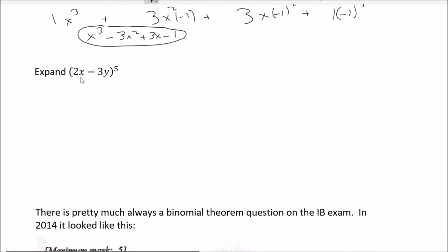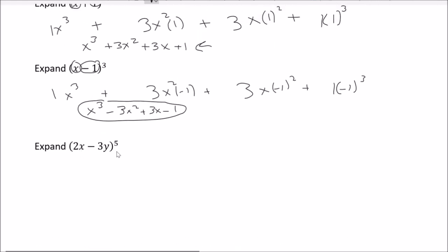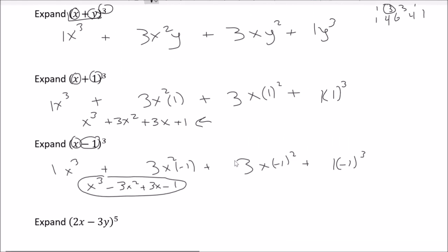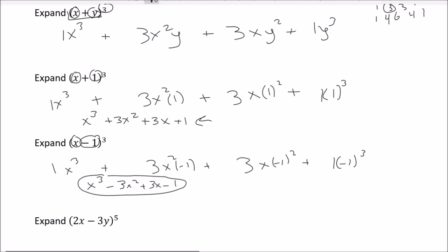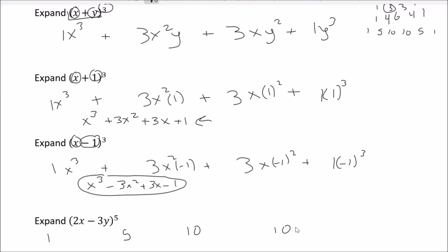Now for a really exciting one: expand 2x minus 3y to the fifth. Going back to Pascal's triangle, I need the fifth row: 1 plus 4 is 5, 4 plus 6 is 10, 6 plus 4 is 10, 4 plus 1 is 5, and it ends with 1. So my coefficients are 1, 5, 10, 10, 5, 1.